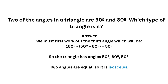Question number one: two of the angles in a triangle are 50 degrees and 80 degrees. What type of triangle is it? Each of the angles will add up to 180 degrees. We know one angle is 50 and one is 80 degrees, so we need to work out the third angle. 50 plus 80 is 130, and 180 minus 130 is 50. So we have angles of 50 degrees, 80 degrees, and 50 degrees — two angles that are the same size. This means it is an isosceles triangle because it has two equal angles.